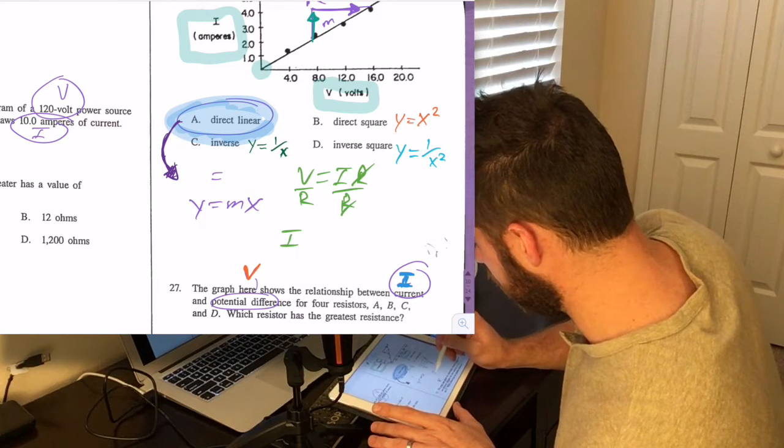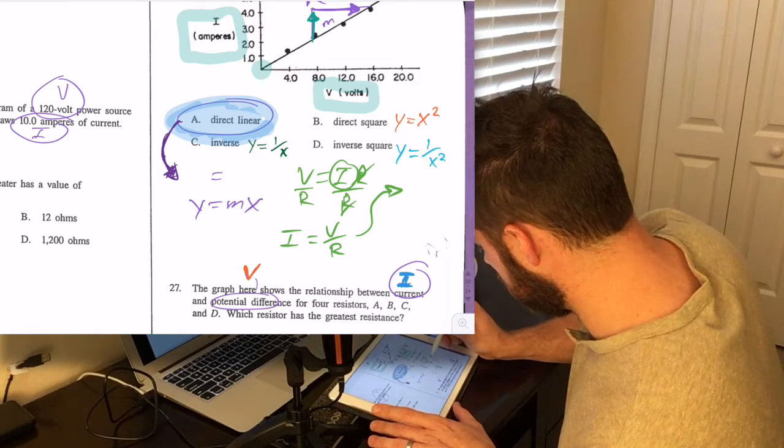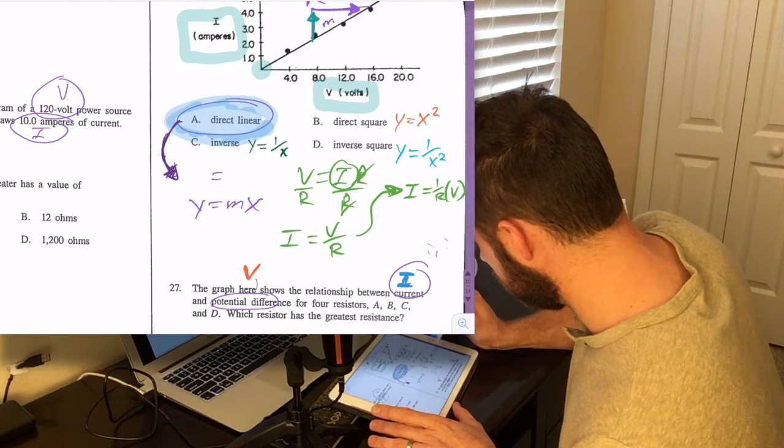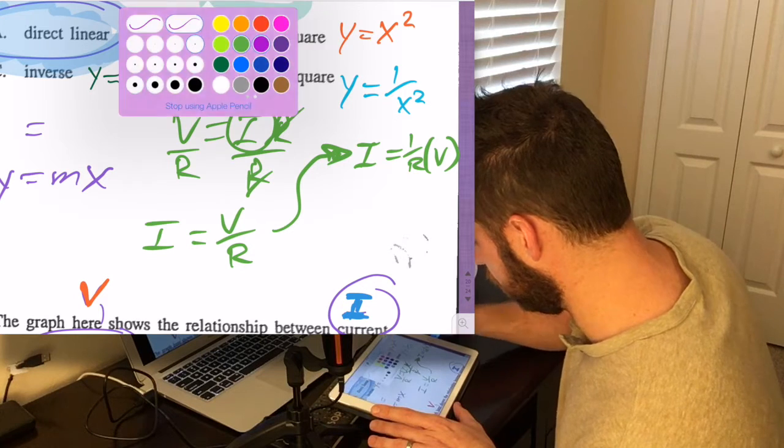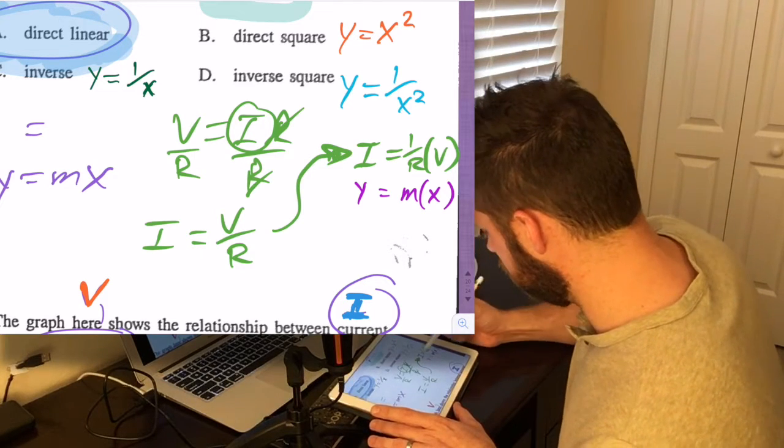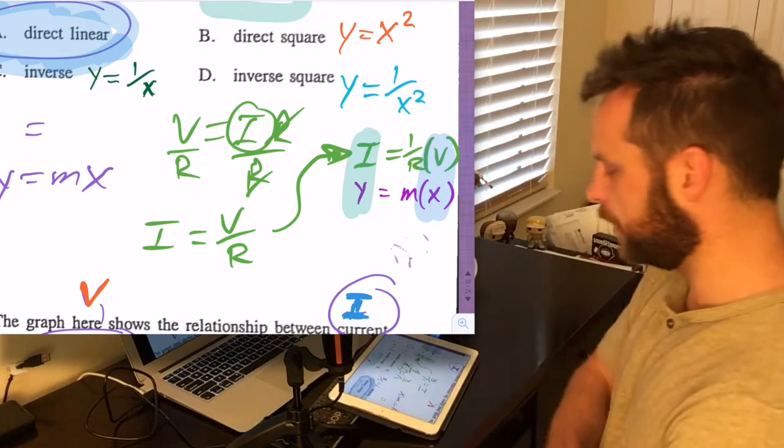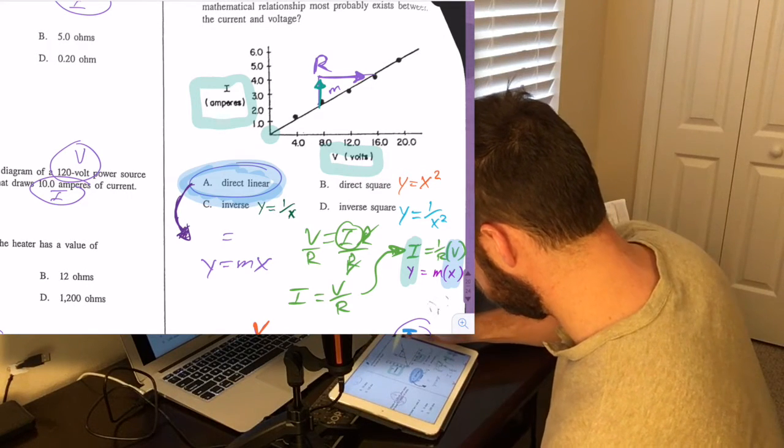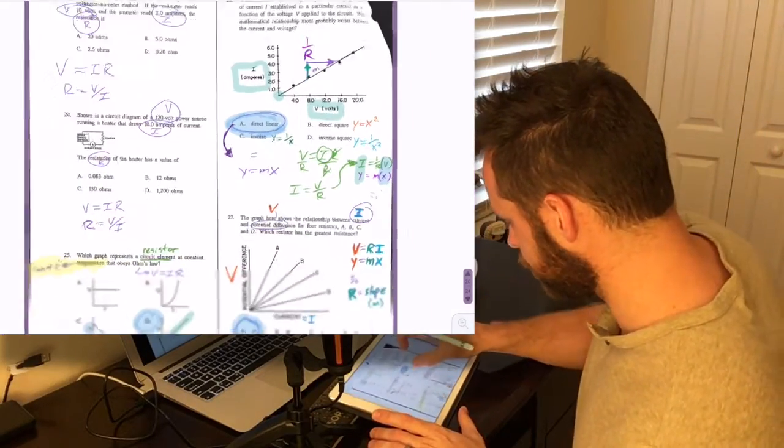So we have, if we write this from left to right, we have I by itself equals V over R. And then isn't that the same thing as writing I equals one over R times V? Isn't that the same mathematically? And then let's line that up with Y equals MX. So I graphed on the Y and V graphed on the X will give you a slope of one over R. And so if we were to actually calculate this slope, this slope would equal the inverse of the resistance, one over R.